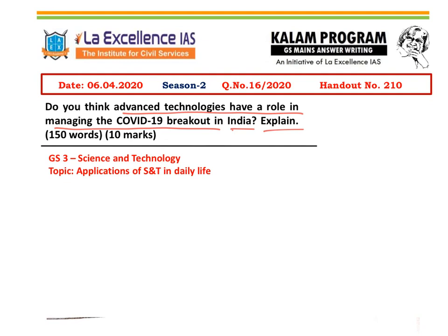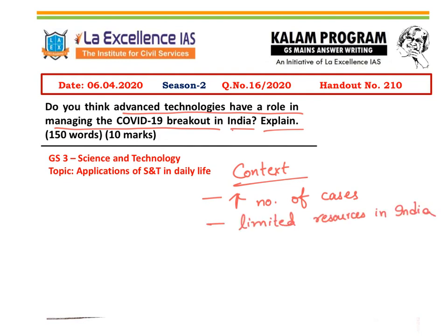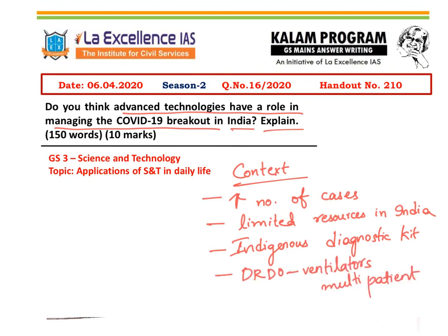Let us first see why this question has been asked. The number of cases in India are increasing day by day, and the health resources in India are very limited. Recently, a private laboratory named MyLab has come up with a diagnostic kit indigenously developed in India. Along with that, DRDO — Defence Research Development Organisation — has come up with a new ventilator which could cater to 4 or 5 patients at a time, with a proposal to develop many such ventilators. Also, the Government of India has come up with an online app — the Aarogya Setu app — to disseminate information as well as track patients. Many technological innovations are coming up in India so that the COVID-19 outbreak could be controlled. It is in this context that the question has been asked.